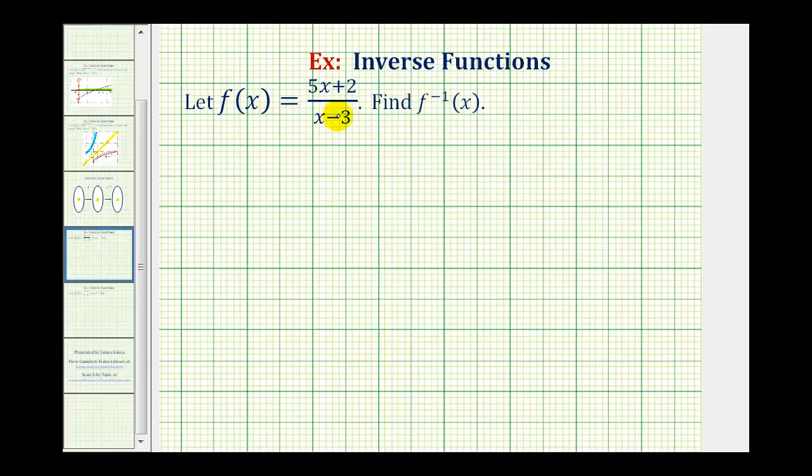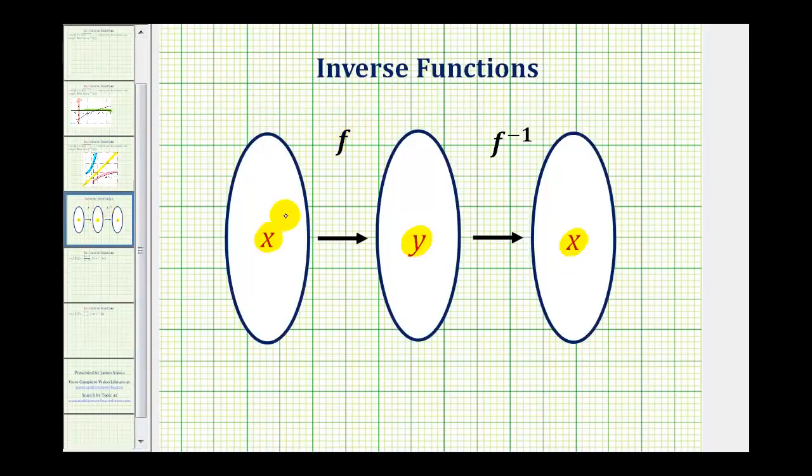To remember how to do this, I think it's important to recognize that the inverse function is going to undo the operation of the original function. For example, if x is the input into the function f and y is the output, this y becomes the input into the inverse function, which returns the original value of x.